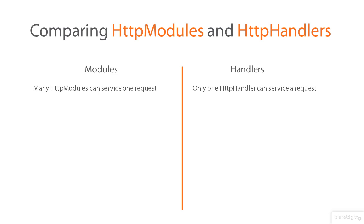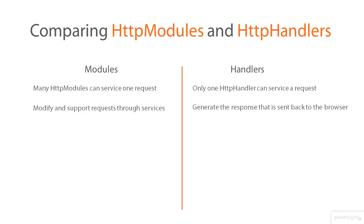You can change which handler is assigned to execute for a request, but in the end, only one of them will execute. This all makes sense if you think about it. Most applications require many services which are provided by the modules, but in the end, only one response can be generated for an HTTP request. This is the handler's primary responsibility.